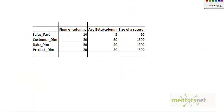Let's go through the steps to size a warehouse — how much space is occupied and what each component contributes. The sales fact table has about 10 columns with an average column size of 5 bytes, since most columns are keys rather than textual attributes. The dimensions average 30 columns at around 1,500 bytes per record, since they contain textual attributes. Multiplying 10 by 5 gives 50 bytes as the size of a fact record. These are all average sizes used for estimation.